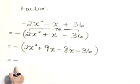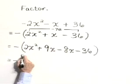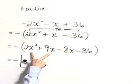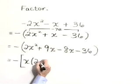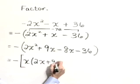Don't lose your negative sign out in the front. From our first two terms, we'll factor out the common x, writing x times 2x plus 9.